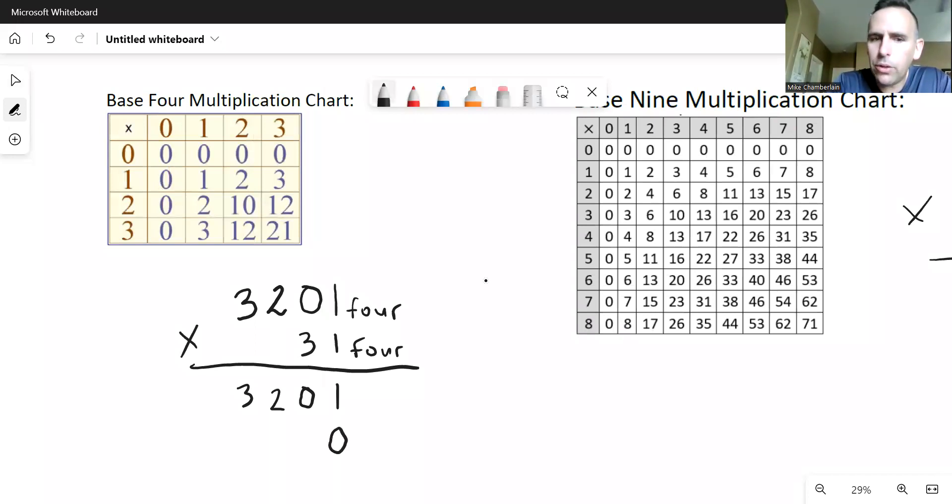On the next one, though, we should be a little careful because we're going to be multiplying by a three. So that means we might want to look at this bottom line in our chart for all of our multiplication facts. Three times one, that's still three. Three times zero, zero, three times two. Not six, right? There is no six in base four. So we can look at our chart and see that we're right here at one, two.